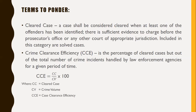A case shall be considered cleared when at least one offender has been identified and there is sufficient evidence to charge before the prosecutor's office or court of appropriate jurisdiction — solved cases are included in this category. Crime Clearance Efficiency (CCE) is the percentage of cleared cases out of the total number of crime incidents handled by law enforcement agencies for a given period. Formula: CCE = (cleared cases ÷ crime volume) × 100.